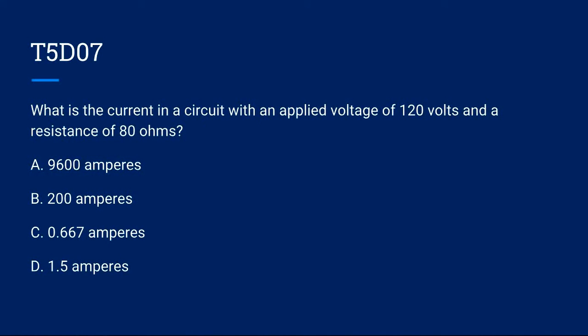T5D07: What is the current in a circuit with an applied voltage of 120 volts and a resistance of 80 ohms? A. 9600 amperes, B. 200 amperes, C. 0.667 amperes, or D. 1.5 amperes. Correct answer is D. 1.5 amperes.